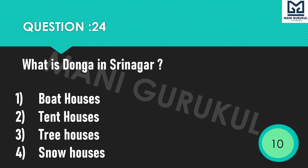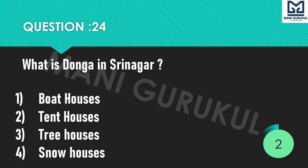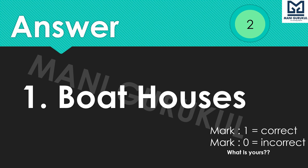Question 24: What is a Donga in Srinagar? Options: 1st Boat Houses, 2nd Tent Houses, 3rd Tree Houses, 4th Snow Houses. Time's up. Answer is 1st: Boat Houses.